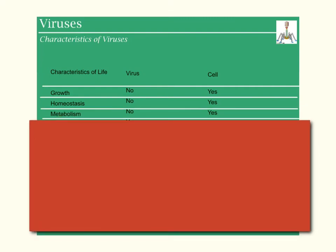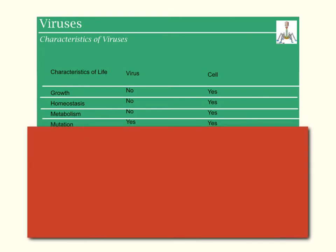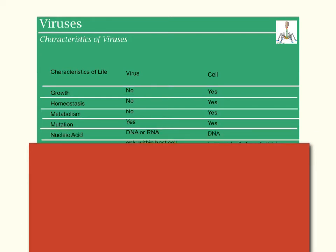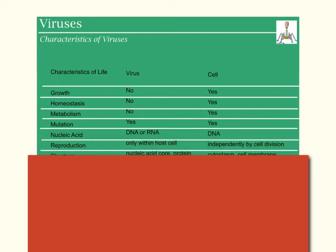Metabolism? Definite no for virus, definite yes for the cell. Can a cell mutate? Yes. Can a virus mutate? Absolutely. How is its nucleic acid? Well, most of our cells are considered of the DNA variety, whereas nucleic acid in viruses can be either DNA or RNA.